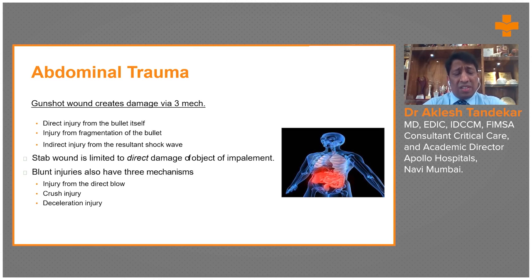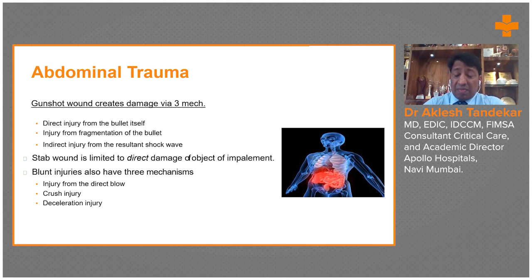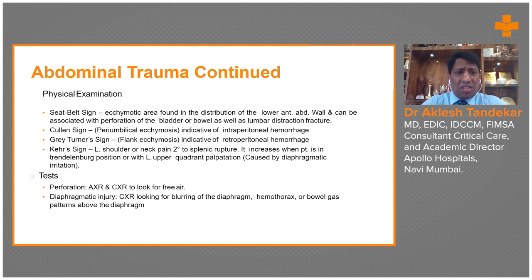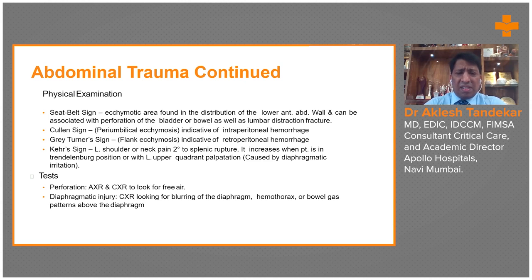Gunshot injuries can be significant because they cause three types of injuries: direct injury from the bullet, injury from bullet fragmentation, and the shock wave. The patient may become exsanguinated due to significant bleeding. Physical examination is very important and can show ecchymotic areas. In the case of a seat belt sign in motor vehicle accidents, ecchymotic areas in the distribution of the lower abdomen can indicate injury.